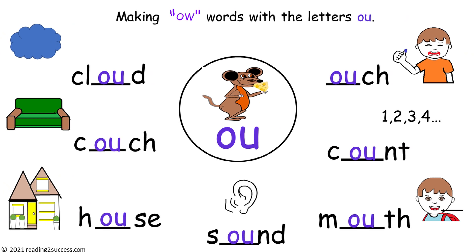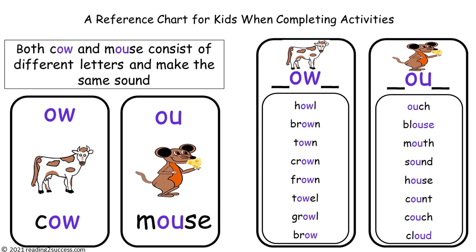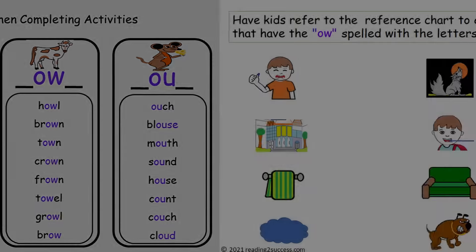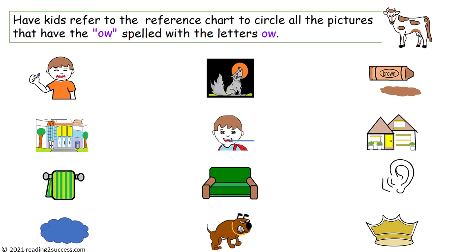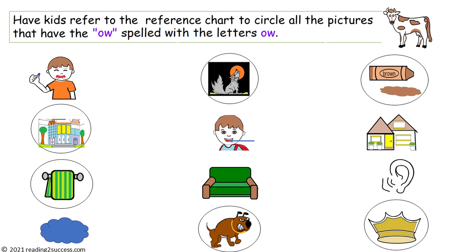This is a second reference chart for kids to use. This chart will help them distinguish between what spelling is used for words that have the ow sound. With your support and the use of the reference chart, have children circle the words that make the ow sound with the letters O-W. This is a completed example, and the pictures circled are howl, brown, town, towel, growl, and crown.